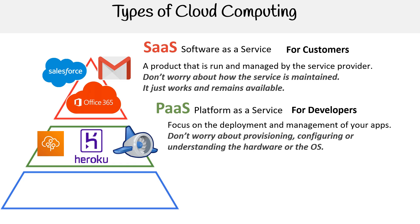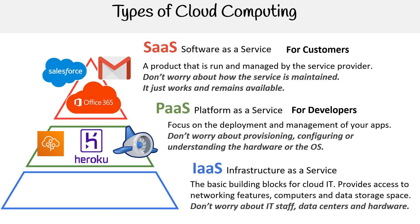Platform as a Service makes it easy for developers to build apps on the cloud without worrying about all the stuff underneath. Finally, we have Infrastructure as a Service, abbreviated as IaaS. This is the basic building blocks for cloud IT. It provides access to networking features, computers, and data storage space. You don't worry about the IT staff, data centers, and hardware.